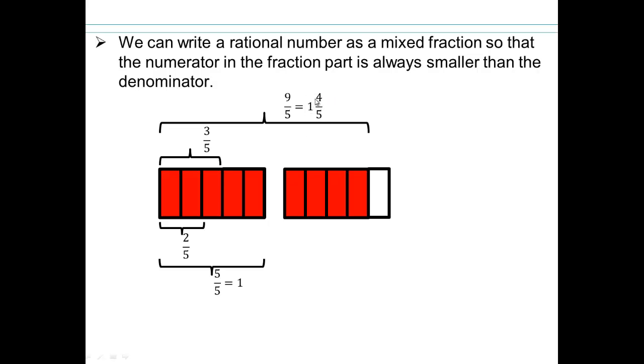If you wanted to go from 1 and 4 fifths backwards towards 9 fifths, 1 is the same as 5 fifths, plus 4 more will give me 9 fifths. So basically, whatever number is here times the denominator, that's how many pieces the whole is made up of, and then you just add these pieces to it. So that's how you'll go back and forth between a fraction and a mixed fraction. So a rational number can be written as a mixed fraction so that we always have the numerator smaller than denominator, and the whole is sitting right there.